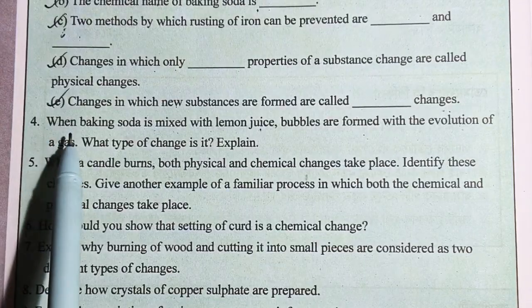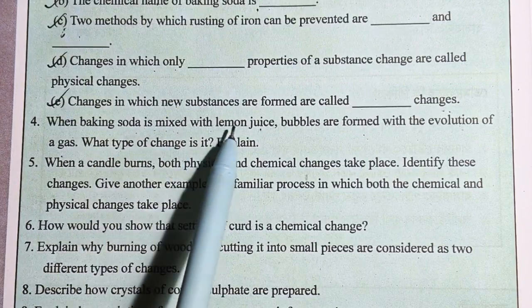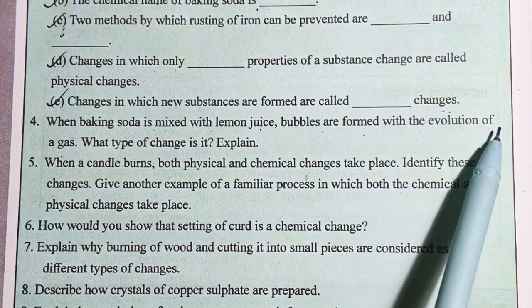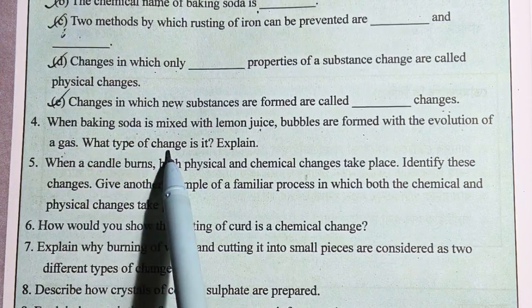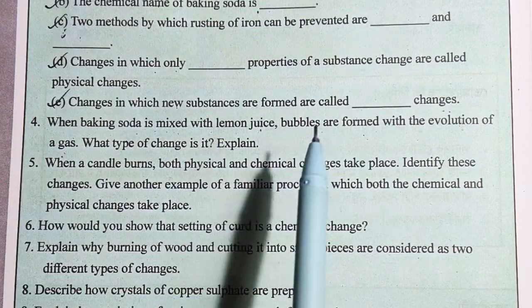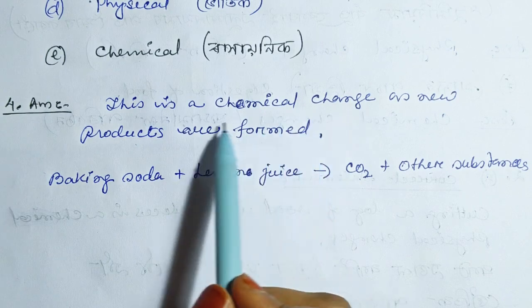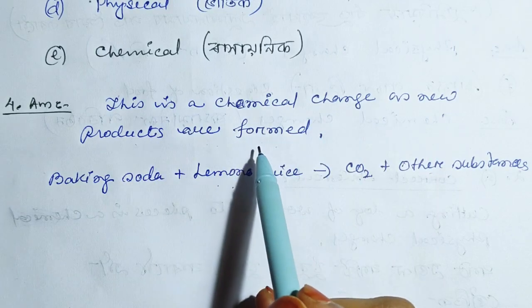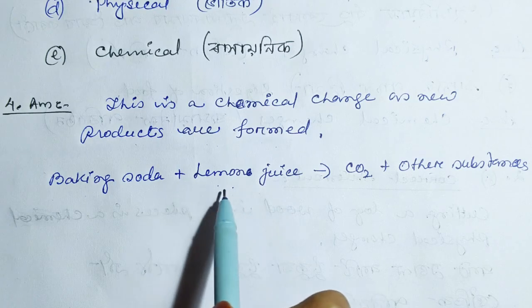Question number 4: When baking soda is mixed with lemon juice, this is a chemical change as new products are formed.